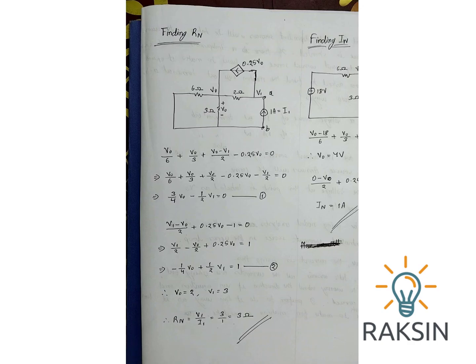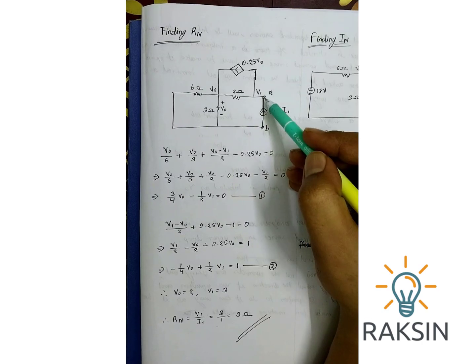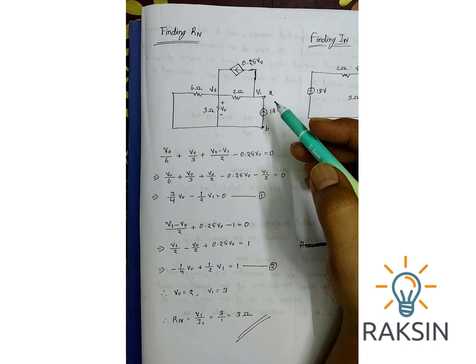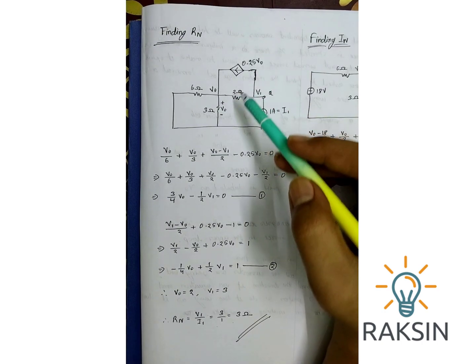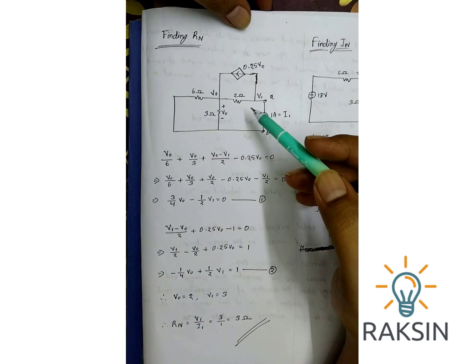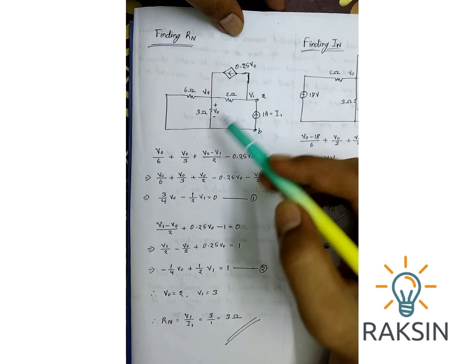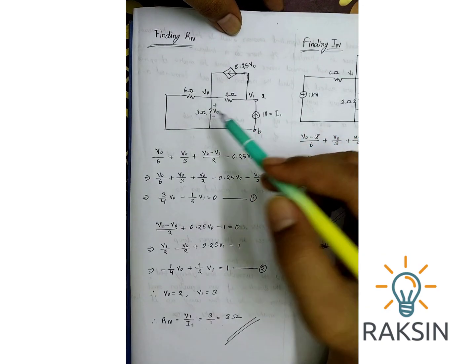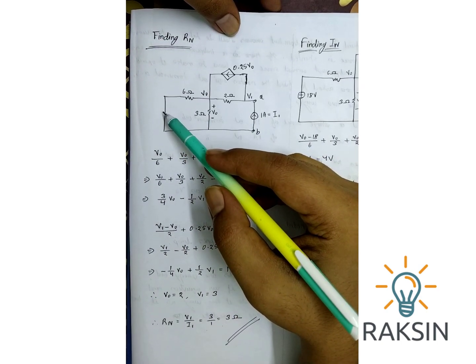We have to find Rn or input resistance at terminal A and B. In order to do that, only dependent sources will be taken into account and the independent voltage source and current source will not be considered. If there is an independent voltage source it will be shorted out, like in this case the 18 volt independent voltage source is shorted.